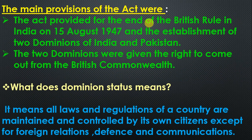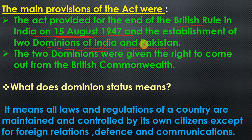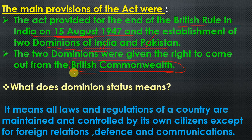The act provided for the end of British rule in India on 15th August 1947, and the establishment of two dominions — India and Pakistan. The two dominions were given the right to come out of the British Commonwealth. They had full authority to decide whether they wanted to remain in the British Commonwealth or not. The British Commonwealth is a group of countries. India has not yet exited the British Commonwealth and is still a member.